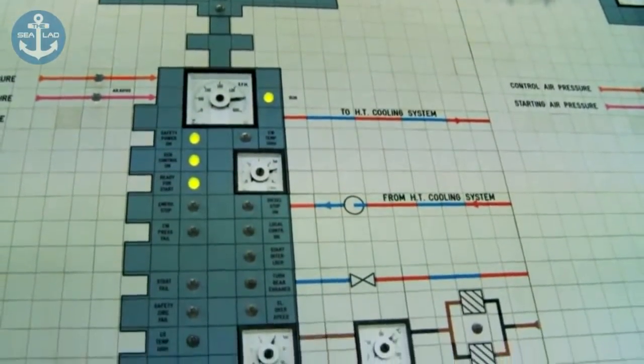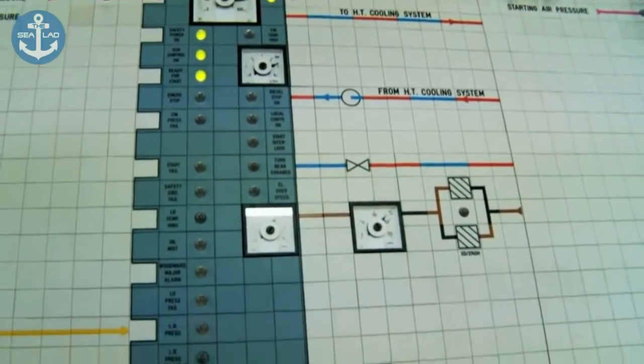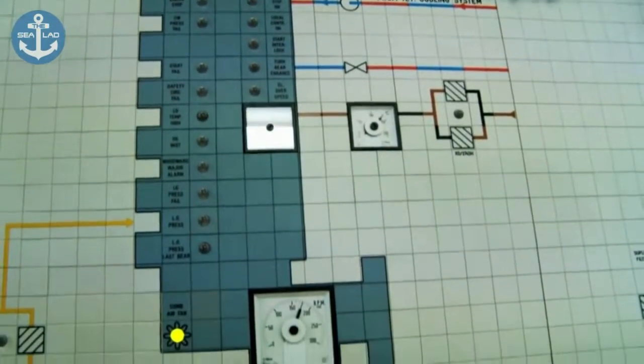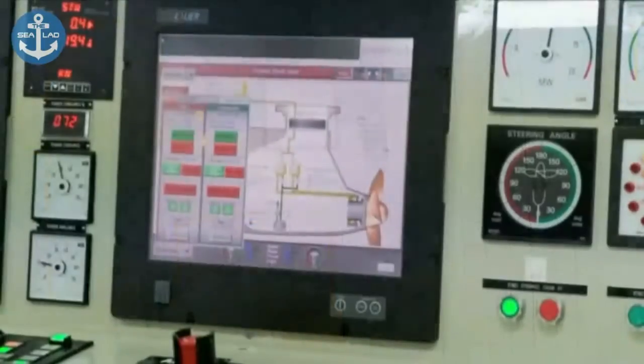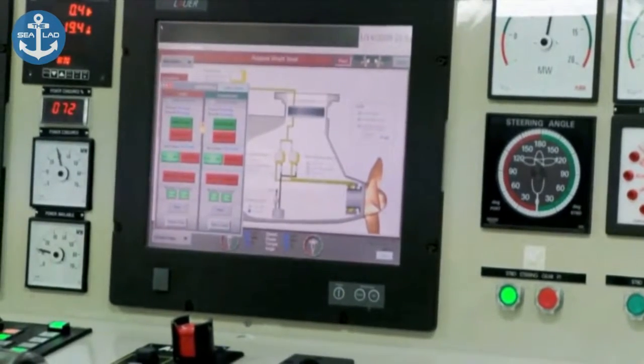That's going into a main switchboard, and from there the whole ship is being fed. So from the light bulbs in the ceiling to the main propulsion, everything is electrical. Even the propellers are driven by huge electric motors.